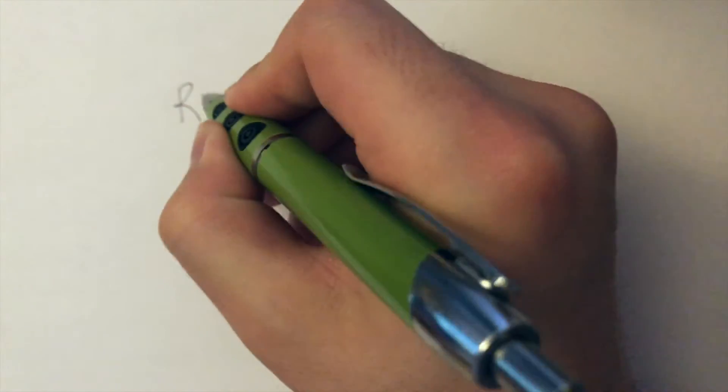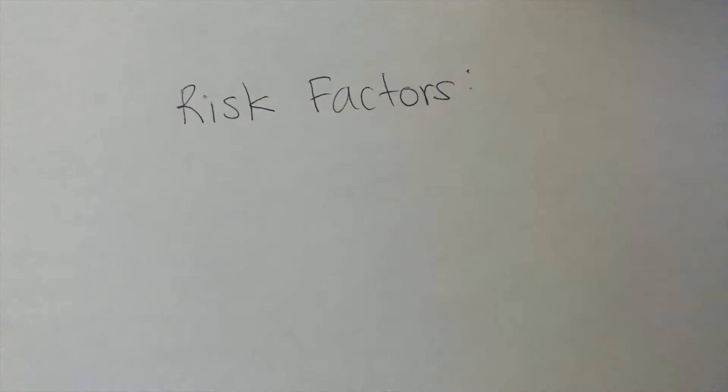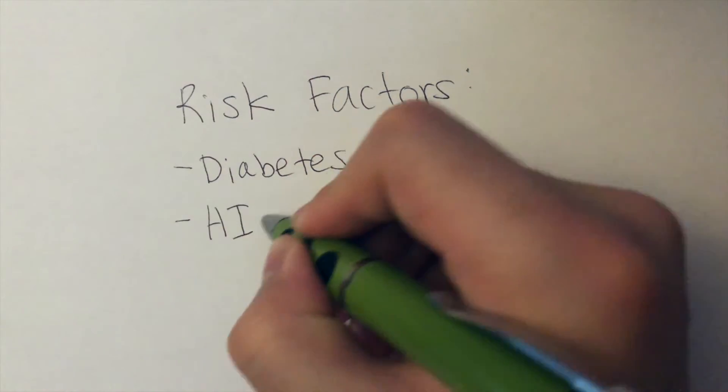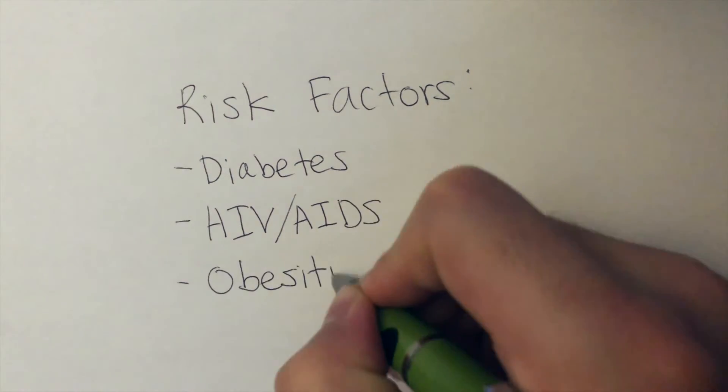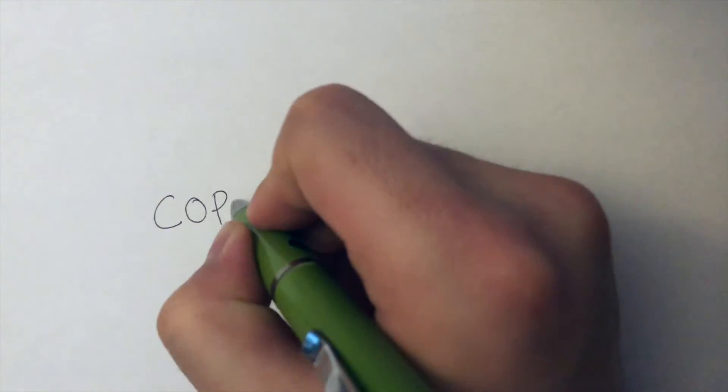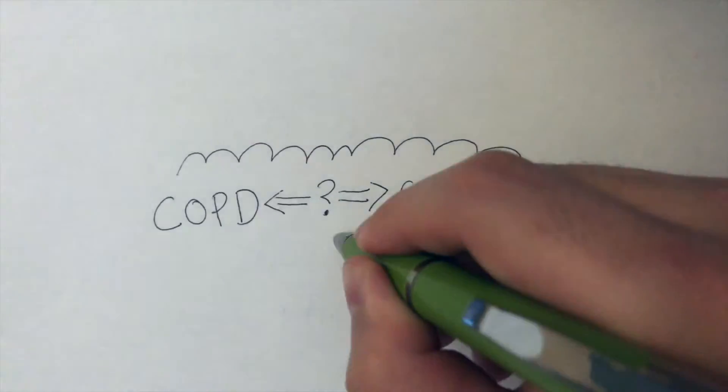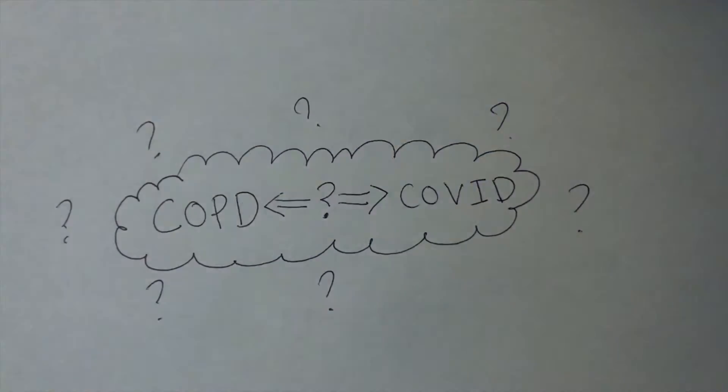Some examples of known comorbidities or medical conditions that increase risk of severe COVID-19 infections include diabetes, HIV AIDS, and obesity. In this video, we will be looking at how being afflicted with a common and dangerous respiratory comorbidity like COPD affects the pathogenesis and severity of COVID-19 infections.